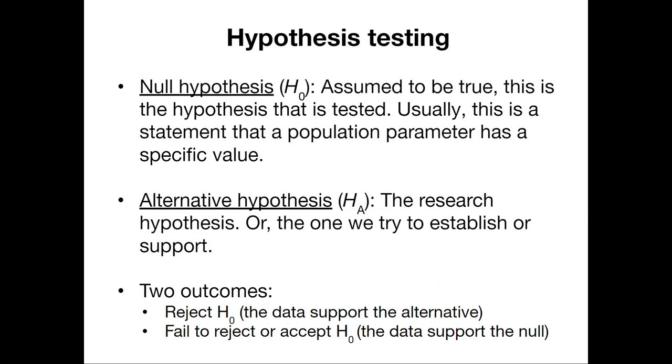Hypothesis testing is really the way that we can do statistical inference. A null hypothesis we can assume to be true. We denote the null hypothesis usually with h sub zero. This is what we're testing. This is usually a statement that the population parameter has a specific value. For example, I think that the difference between two things are not less than zero, or I think that this person is not greater than six feet tall. That might be our null hypothesis.